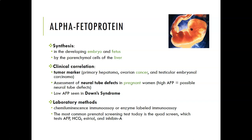Alpha-fetoprotein is also used in the assessment of neural tube defects in pregnant women — a high AFP suggests a possible neural tube defect like spina bifida, and a low alpha-fetoprotein can indicate Down syndrome. Timing of collection is important and is usually done around 16 weeks. Lab methods are chemiluminescent immunoassay or enzyme-labeled immunoassays.